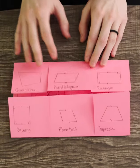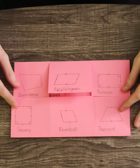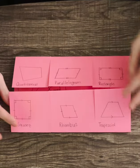And some scissors. So on the outside you're just going to draw all of the quadrilaterals with their names.